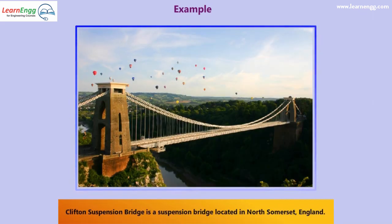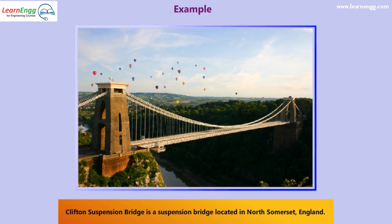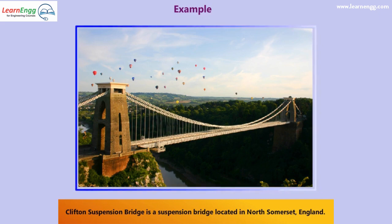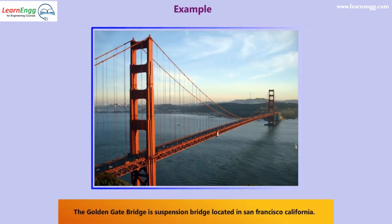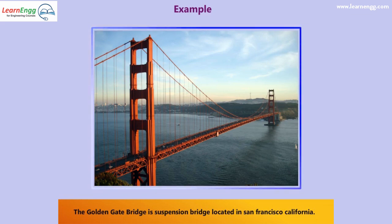The Clifton Suspension Bridge is a suspension bridge located in North Somerset, England. The Golden Gate Bridge is a suspension bridge located in San Francisco, California.